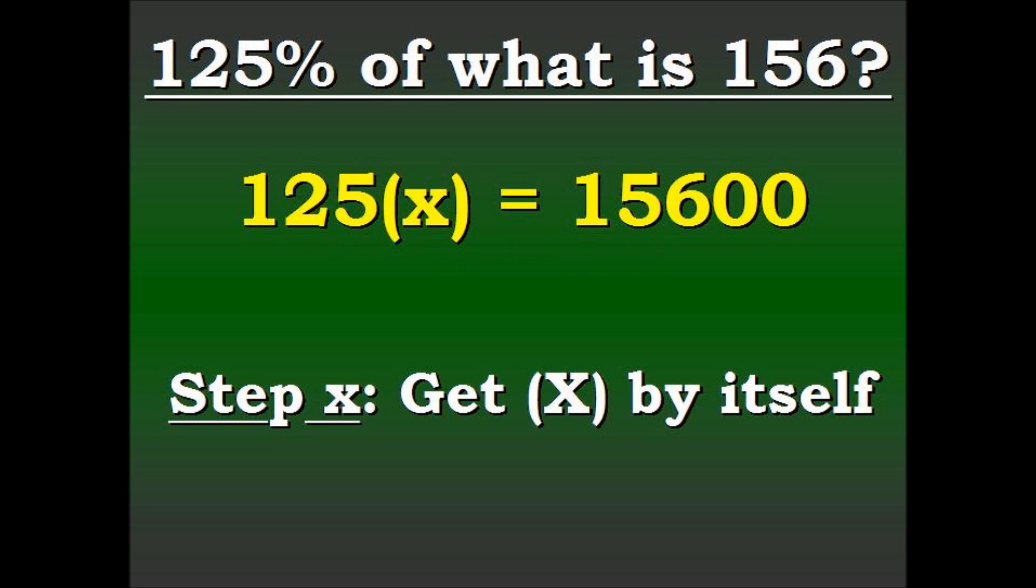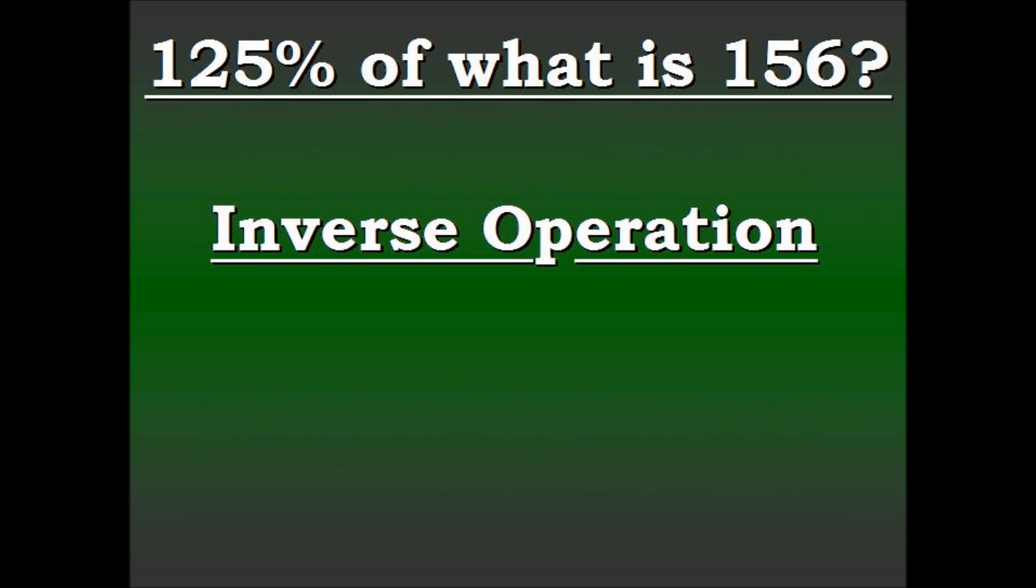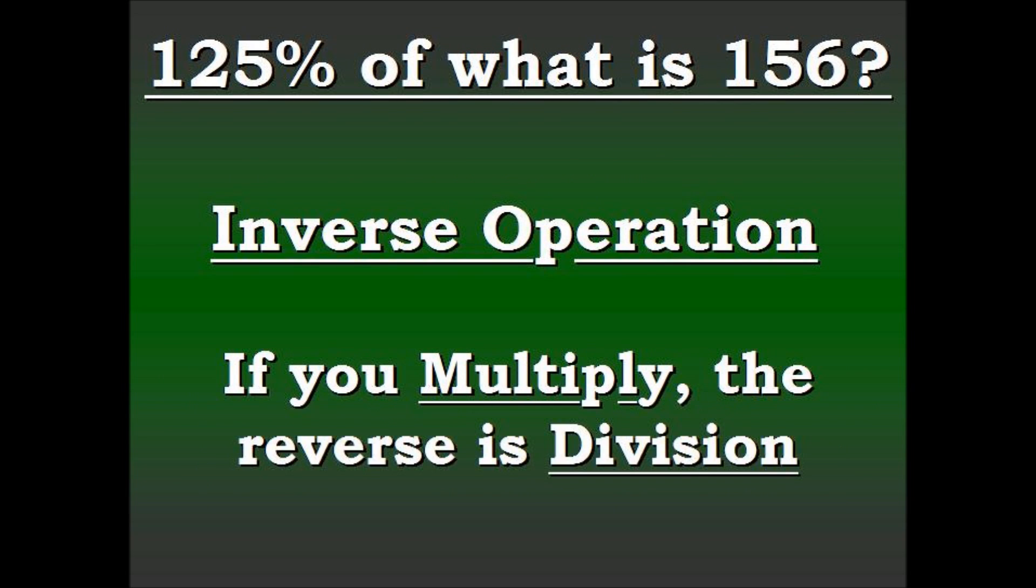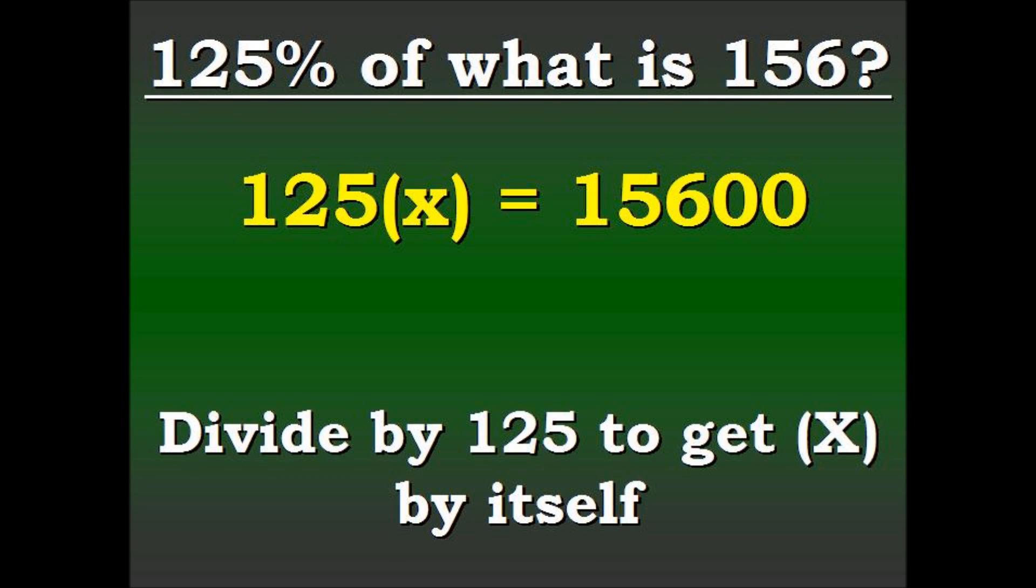Now what we have to do is get X by itself. To get X by itself, we're going to have to use an inverse operation. Inverse operation, you may remember, if you multiply, the reverse or the opposite or the inverse of that is division. Because what we're trying to do is undo that operation. So since 125 is multiplied to X, we're going to divide by 125 to get X by itself.